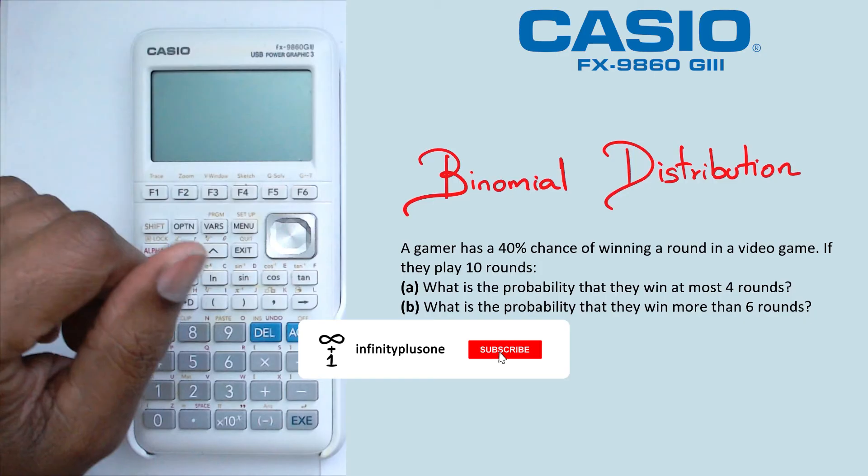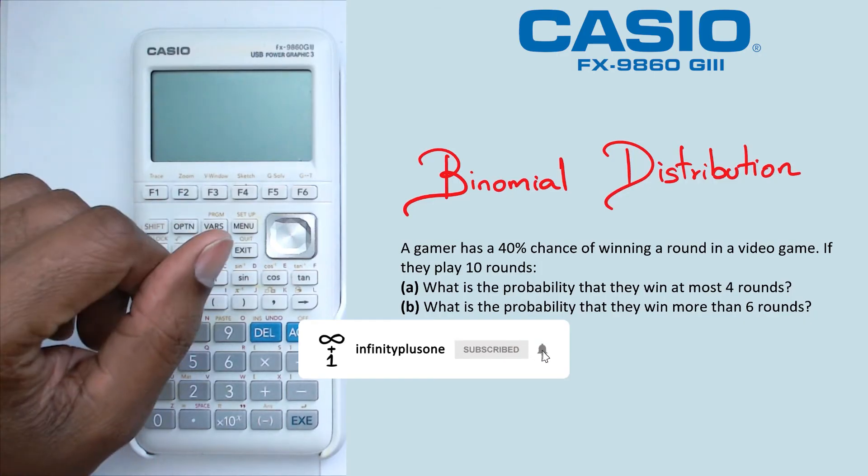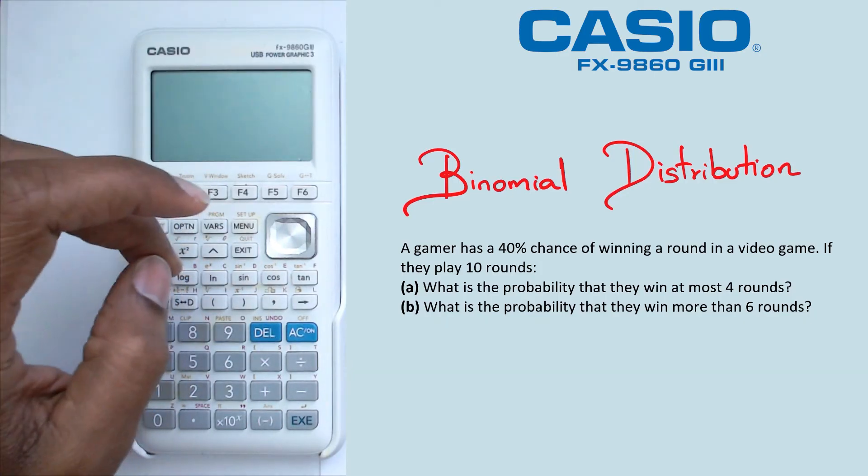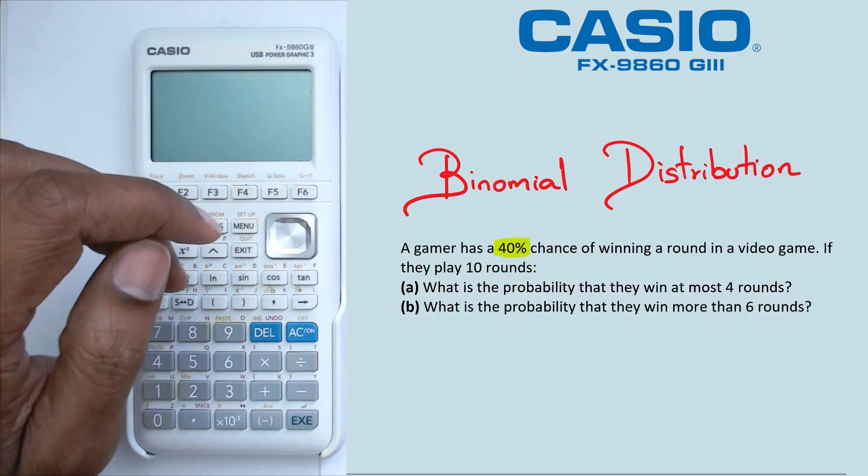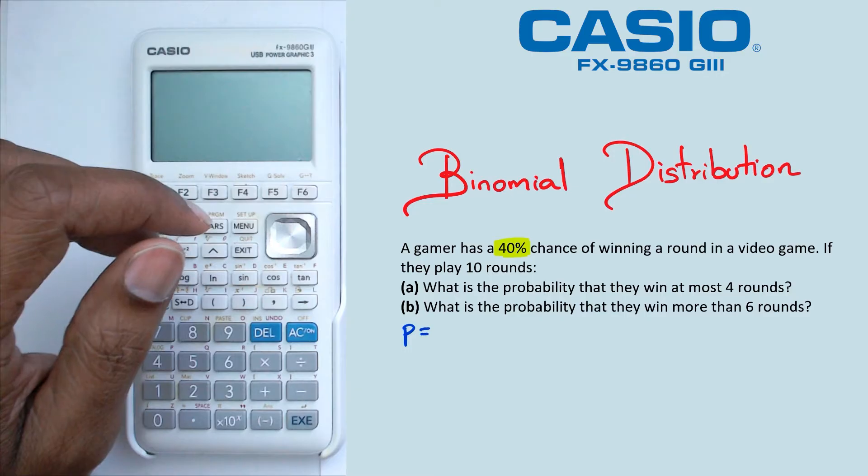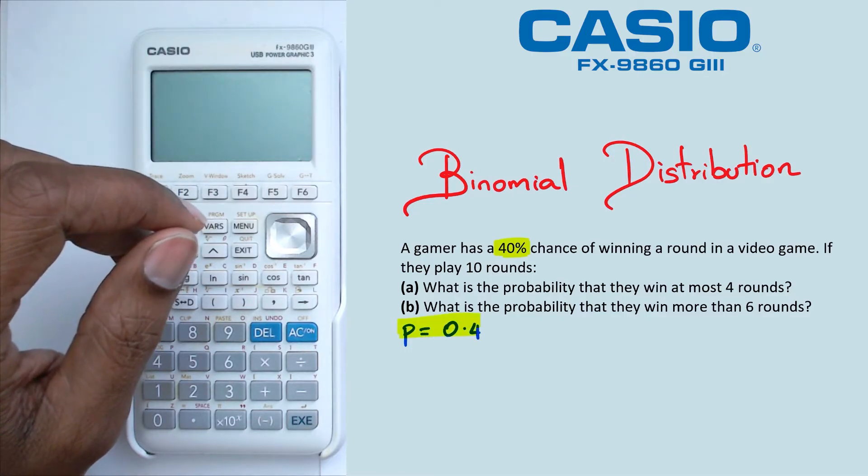All right, so the first thing we want to be doing is let's take the important information for these questions. The first bit of important information that I'm going to need is the 40% chance of winning, which is P equals 0.4. Now this is the probability of success.